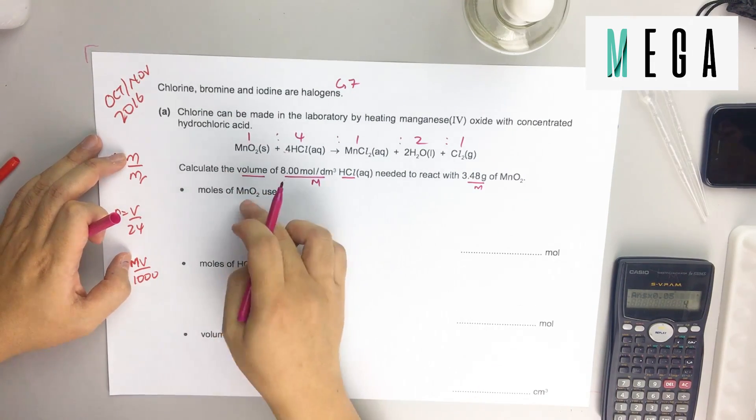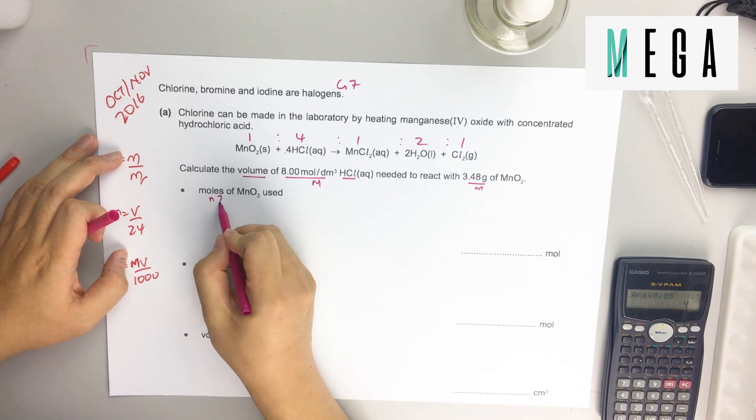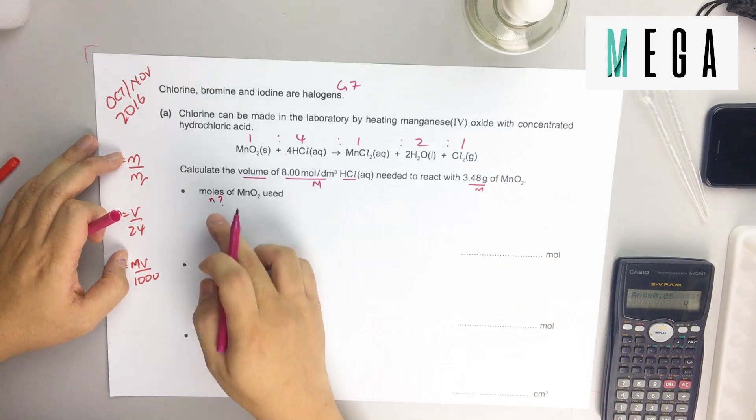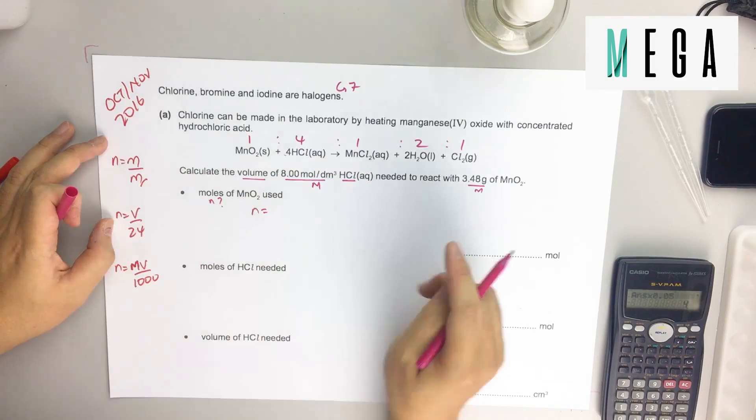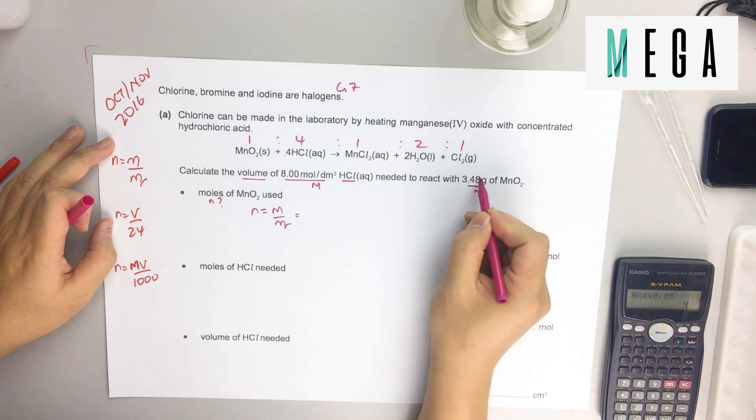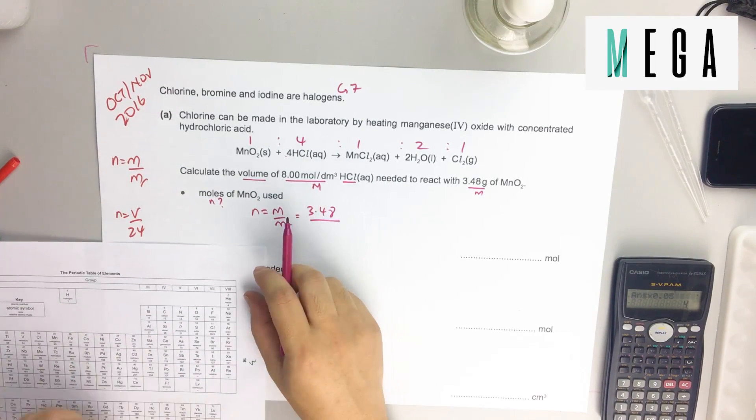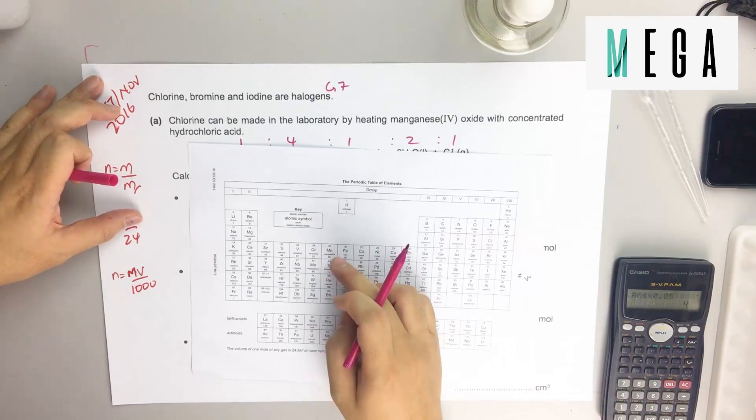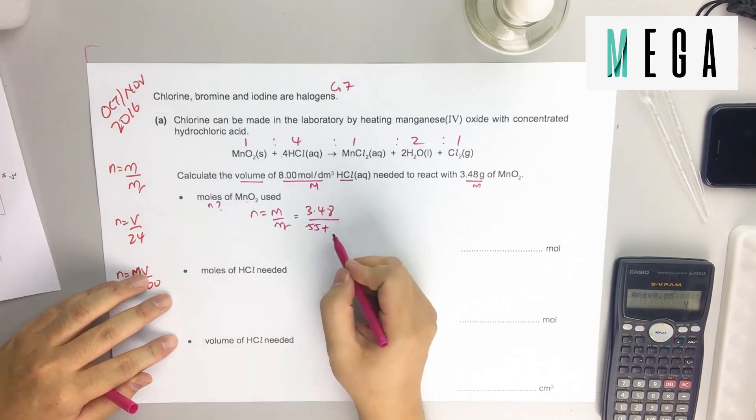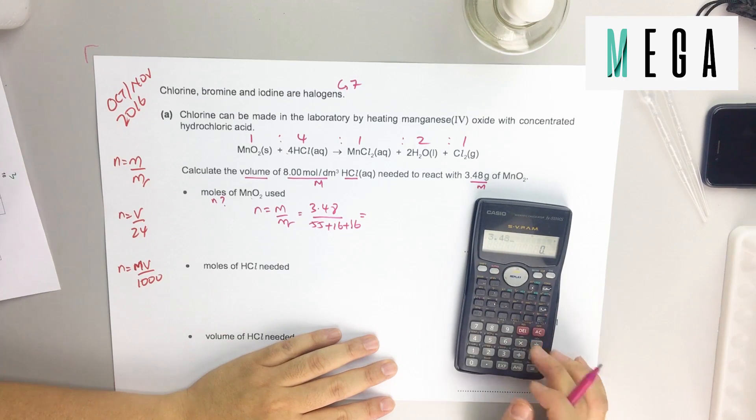Okay, so we just follow their question, follow what they need, and you get the final answer. So moles of MnO₂ - look at it, it's given the mass here, so how do you relate? Recall this: grams, use this. Put in 3.48, then molar mass or relative mass - you have to use the periodic table. Mn is 55, plus O₂ oxygen. Then use a calculator - usually put a bracket.